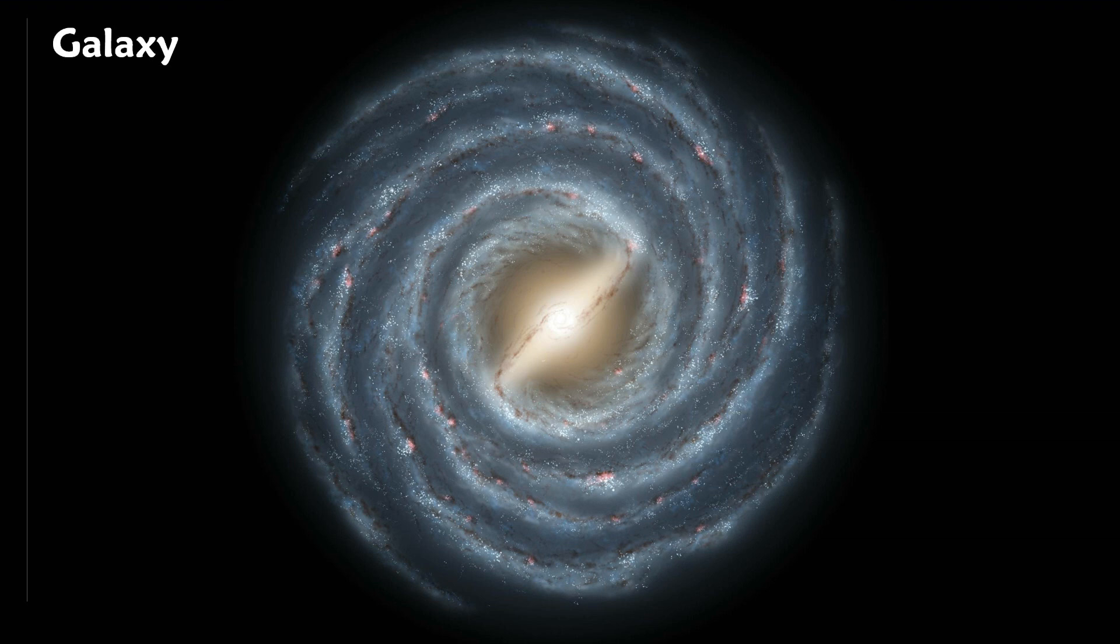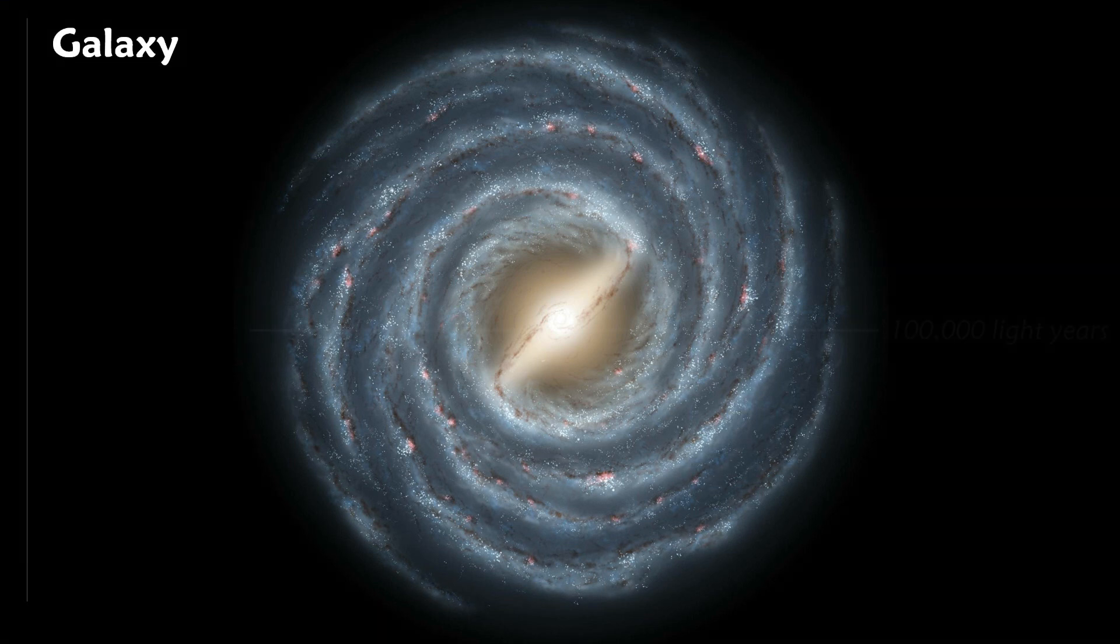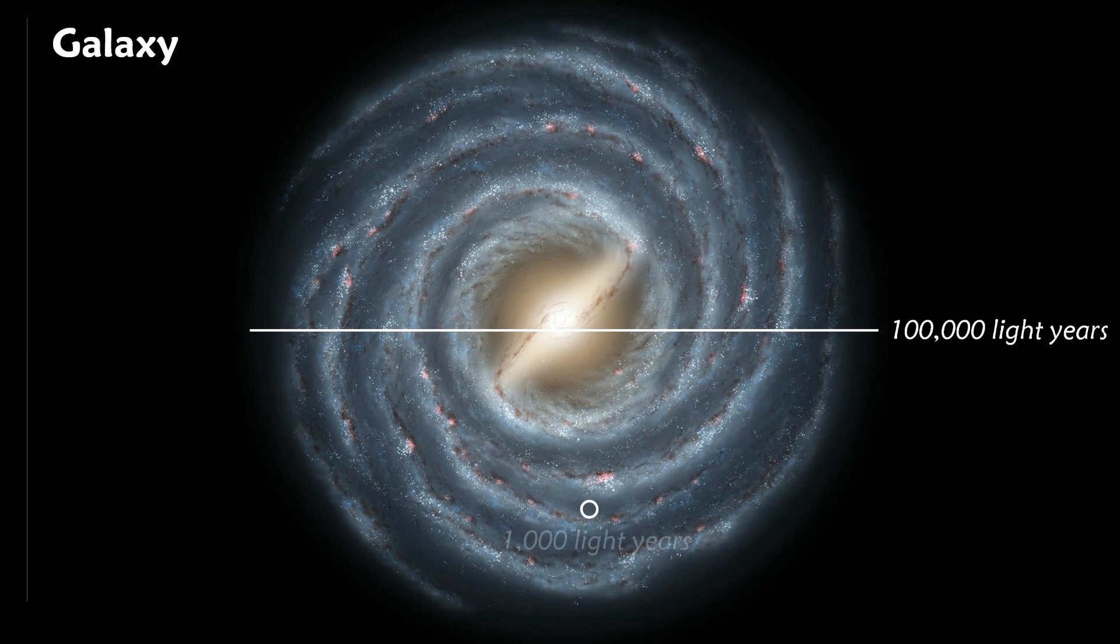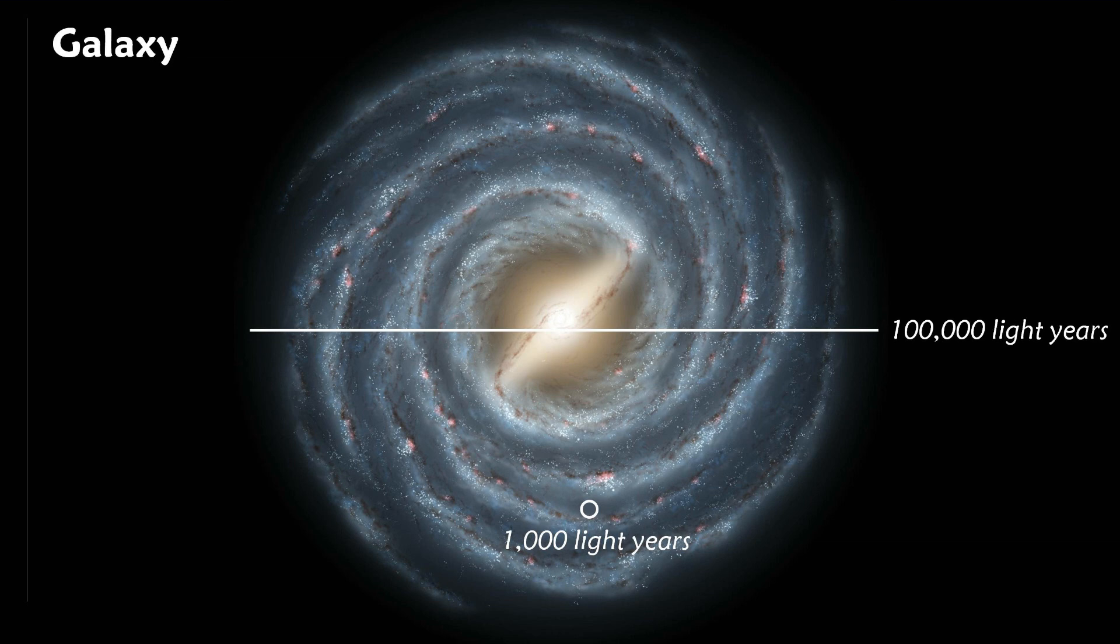Here, every bright dot you see represents many solar systems. The diameter of the Milky Way is about 100,000 light years across, and we are located approximately here, shown in this circle, which is already 1,000 light years across.